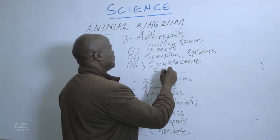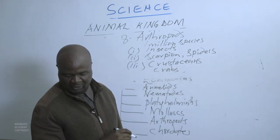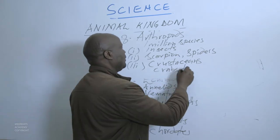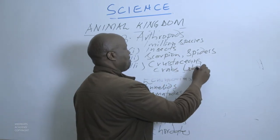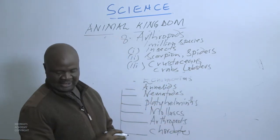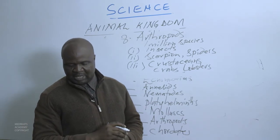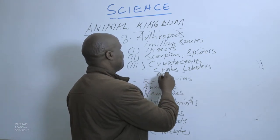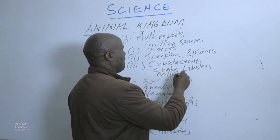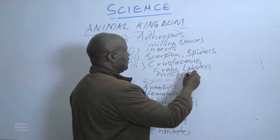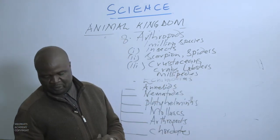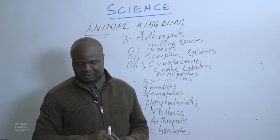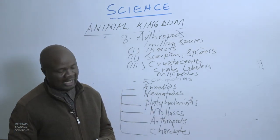Crustaceans are among this phylum of Arthropods. They include crabs, lobsters, and millipedes. These are examples of some of the Arthropods.